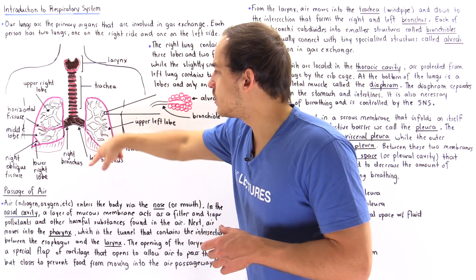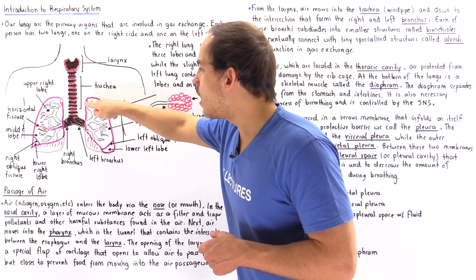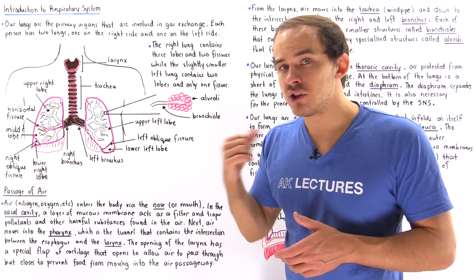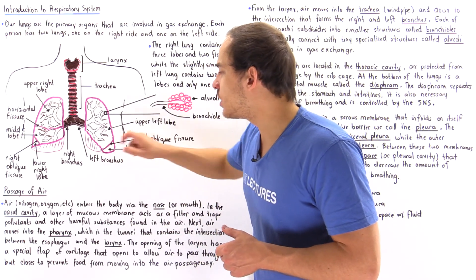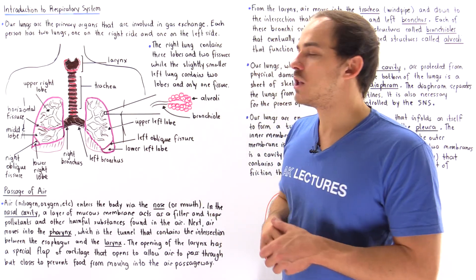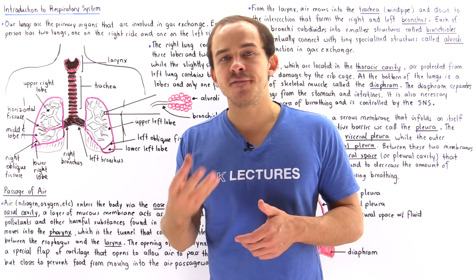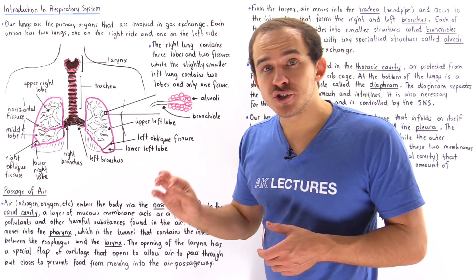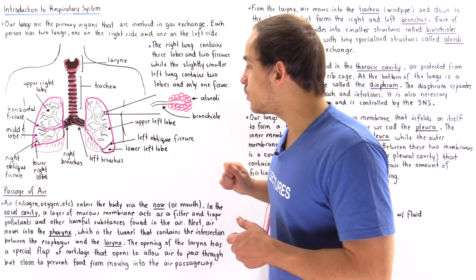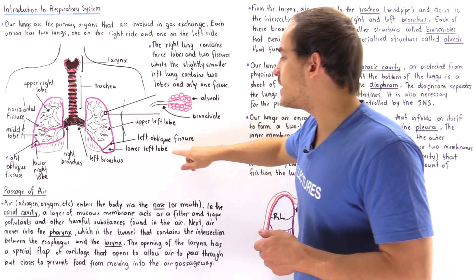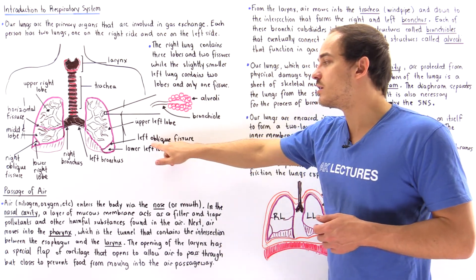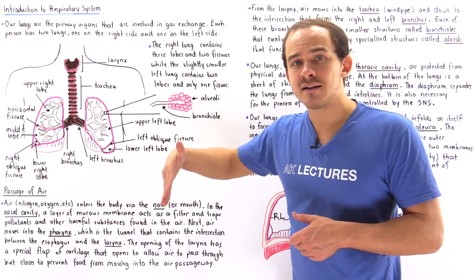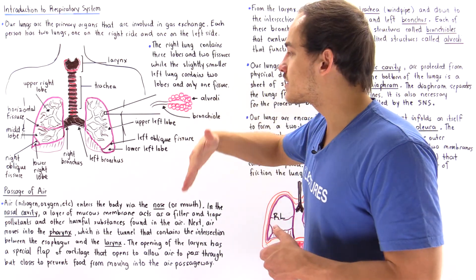Let's begin with the left lung. We have the upper lobe, also known as our superior lobe, and we have the lower lobe of the left lung, also known as our inferior lobe. The fissure that separates these two lobes on the left lung is known as the left oblique fissure. Oblique simply means it's at an angle — it's slanted.